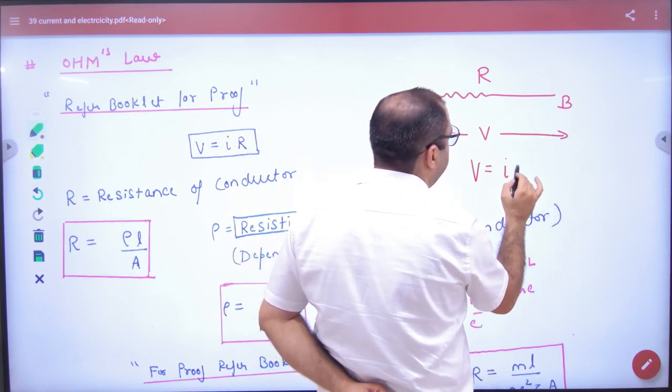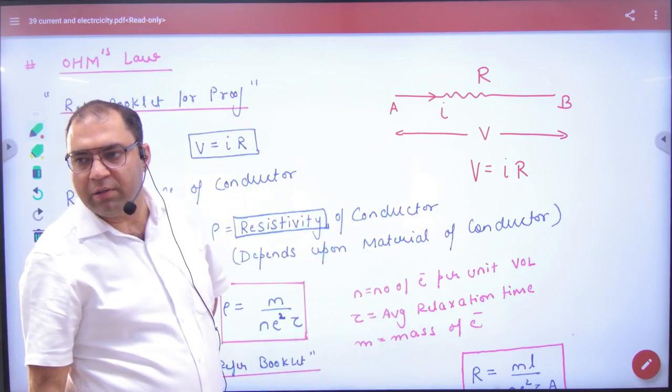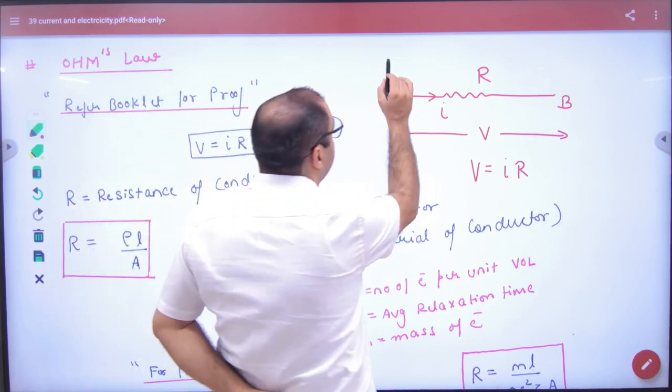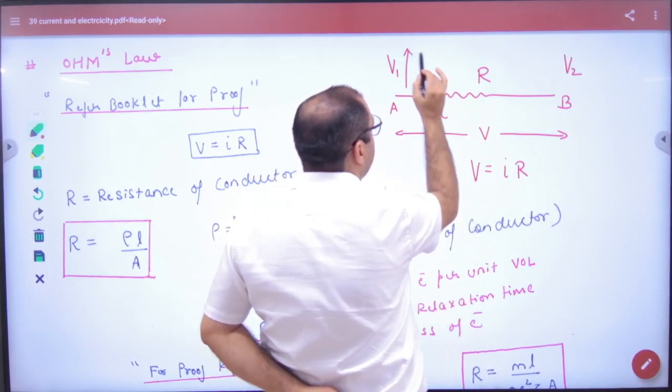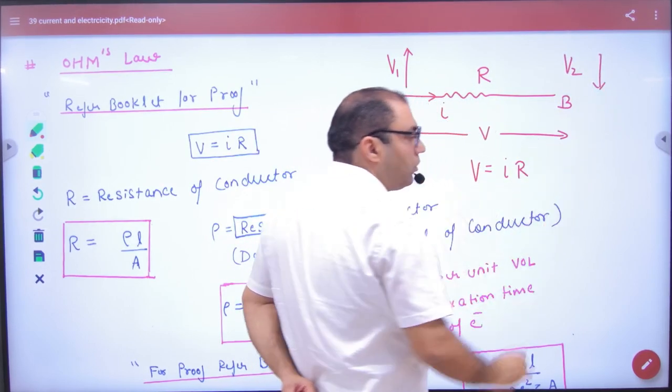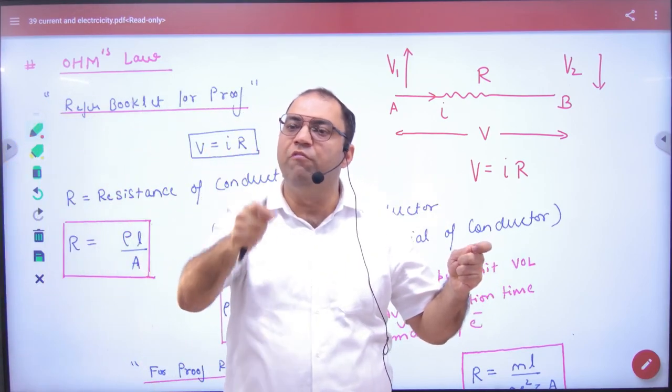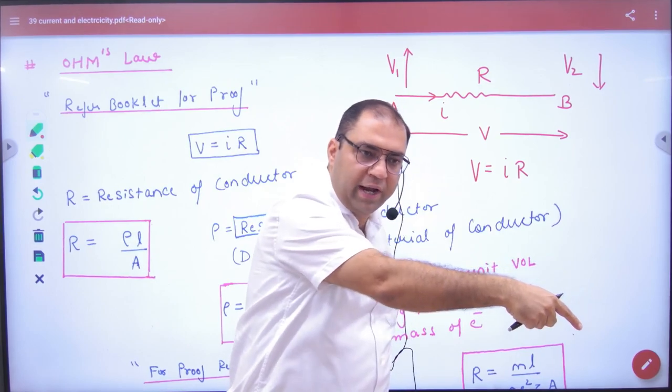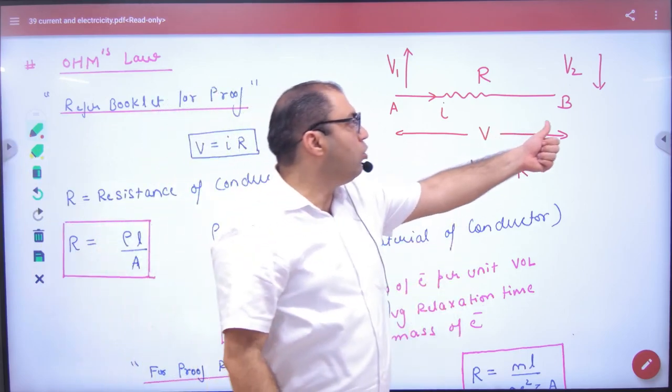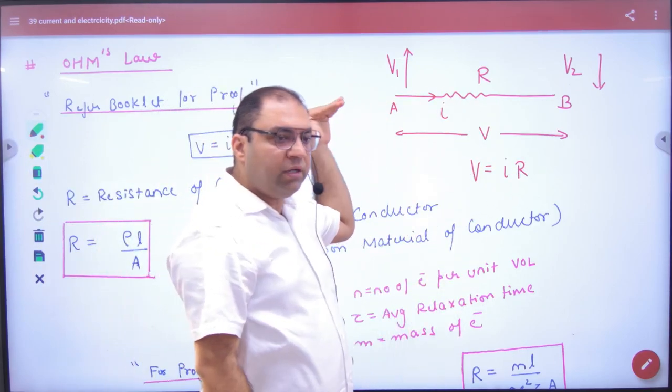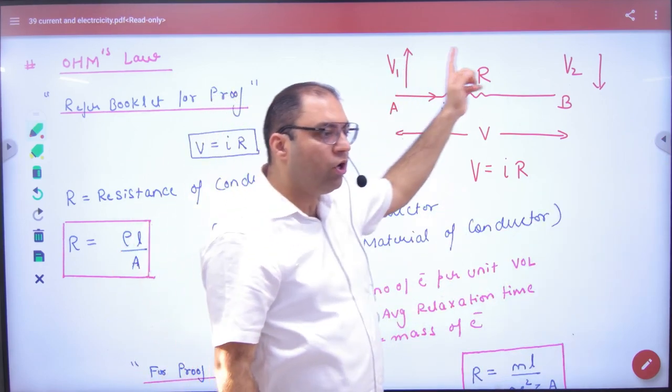Then V is equal to I into R. So V means there is no point of potential here, V means there is two points of potential difference. This V1 is one potential, V2 is another potential. Think that V1 is high potential and V2 is low potential. So you will know that if there is a high and a low potential, then positive charge moves from a higher potential to a lower potential, and electron negative charge moves from a lower potential to higher. So if the electron moves from higher, then the current moves from opposite. So what will the direction of current always remain? Higher to lower potential.